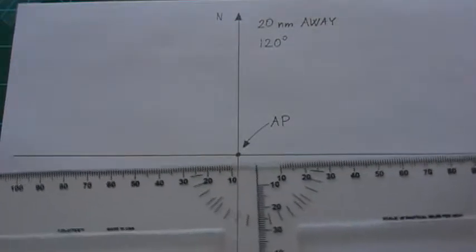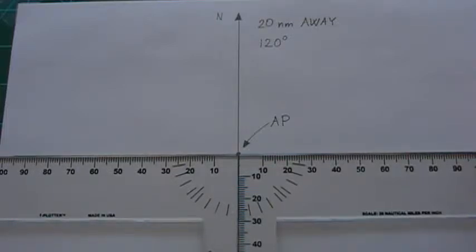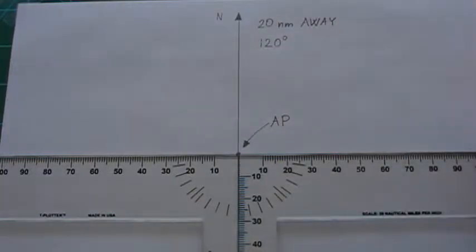So first we can tilt our t-plotter using the protractor by 30 degrees from the east and west direction.